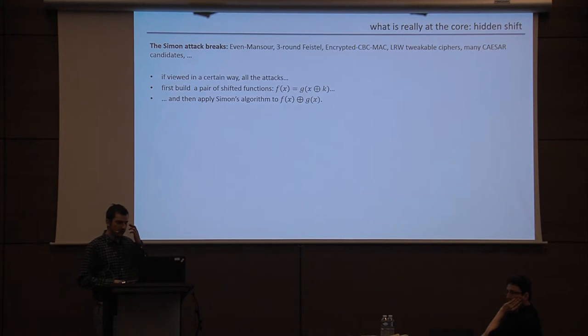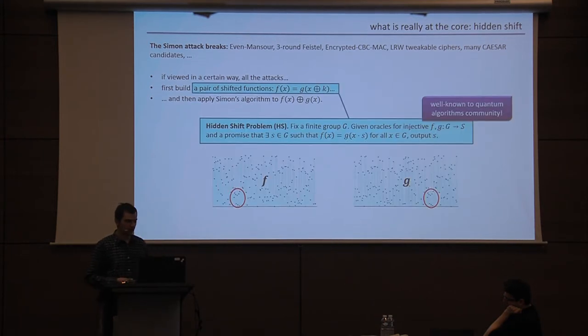So this Simon attack breaks quite a few things. So what's really happening underneath? So if you view these attacks in a certain way, and they're all kind of a little bit different, but from a certain point of view, they all build first a pair of shifted functions f and g. In the Evan Mansour case, these functions are just given to you, and the shift is just the key. In other cases, maybe you have to work a little bit to build these functions, and then the thing that you get from the shift is sort of a yes or no answer, like, is it pseudorandom or is it random? But the basic story looks like this, and then you just apply Simon's algorithm to the XOR of these two functions. So if you've thought about quantum algorithms before, you'll probably notice this shifted problem here. This is exactly the hidden shift problem that the quantum algorithms community has been studying basically since Shor's algorithm. So in the general case, it's stated like this. You have some finite group G, and you have oracle access to two injective functions, and a promise that there's a shift, and the goal is to output that shift.